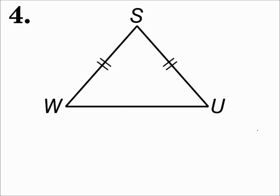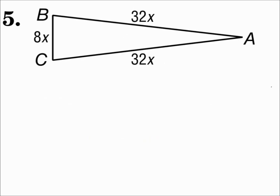Number four has two congruent sides, so it's isosceles. Number five also has two congruent sides — the 32x and the 32x. Even though we don't know what x is, we do know that those values are the same. This one is isosceles.